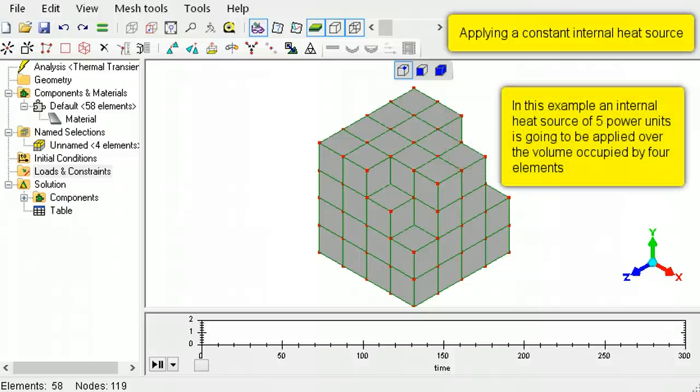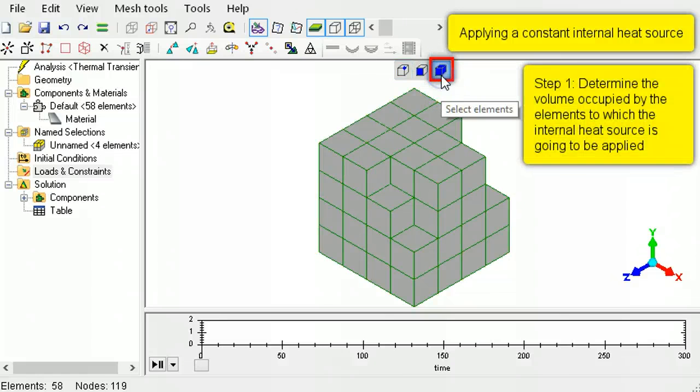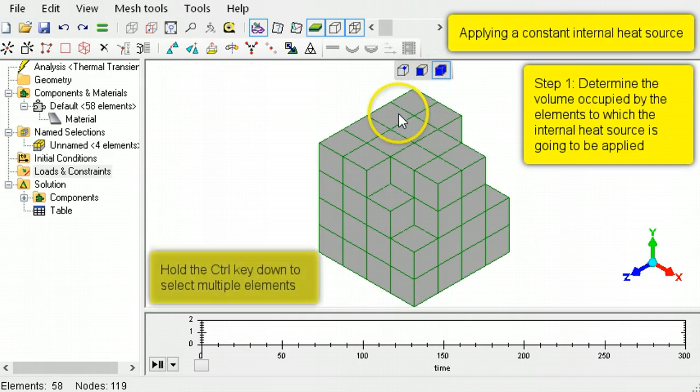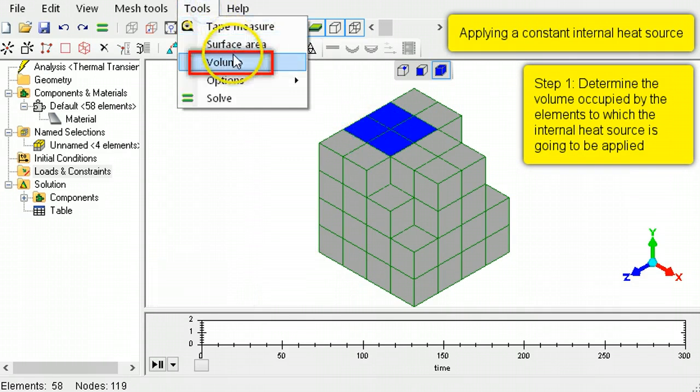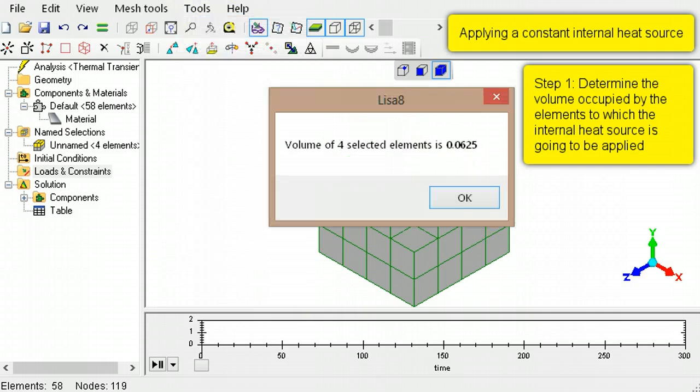For example, if you have an internal heat source generating 5 power units and you want to apply it over 4 elements, activate the select elements mode. Select the 4 elements, then use Lisa's volume measurement to obtain the volume occupied by the 4 elements.